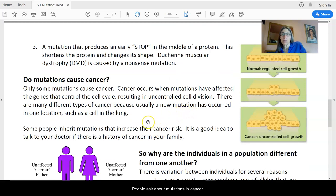People ask about mutations in cancer. Some cancers are caused by mutations. And cancer occurs when mutations have affected the genes that control the cell cycle, resulting in uncontrolled cell division. So, here we have a normal cell division going on, and then we have extra and even more extra, and this is uncontrolled cell growth.